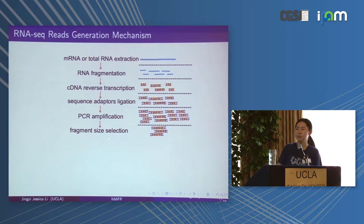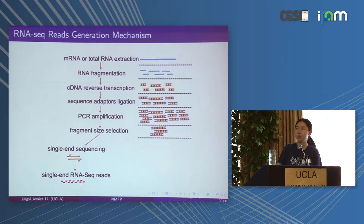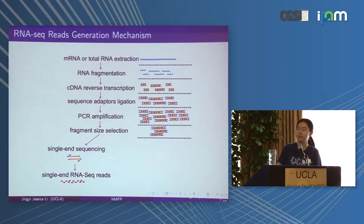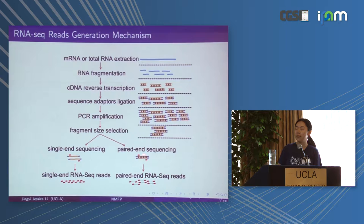There is also a fragment size selection step so that sequences that are too short or too long are filtered out; the remaining fragments are usually between 100 and 300 base pairs. In older next-generation sequencing, single-end reads were used — each double-stranded cDNA fragment had each strand sequenced separately. Later, the technology improved to paired-end reads, meaning you know that two ends come from the same fragment, giving you the two endpoint positions of a cDNA fragment. These paired-end RNA-seq reads are our data.